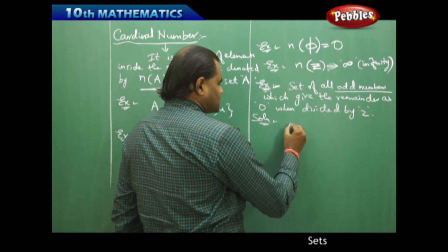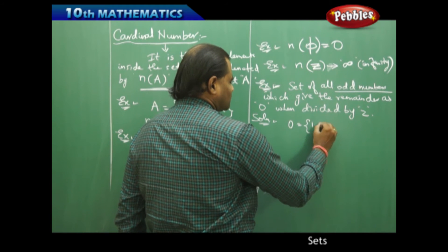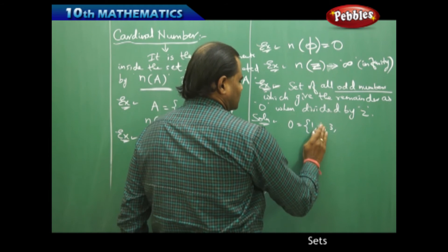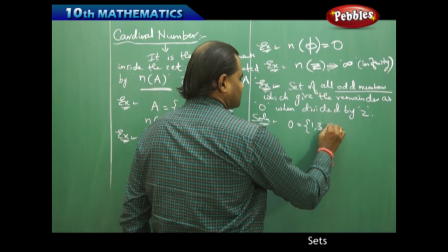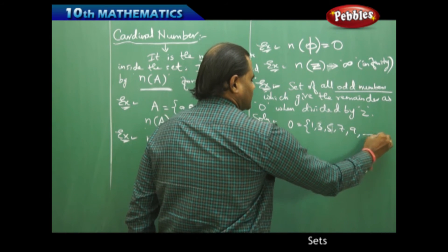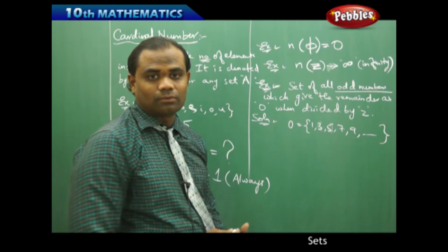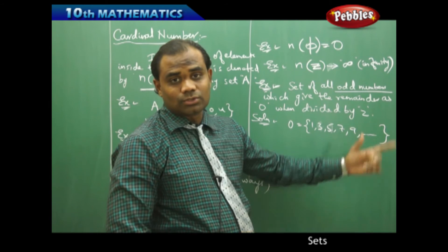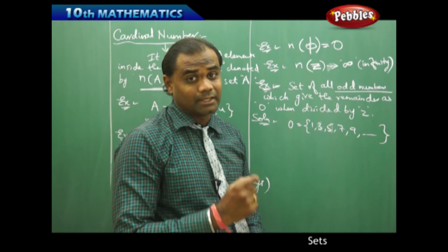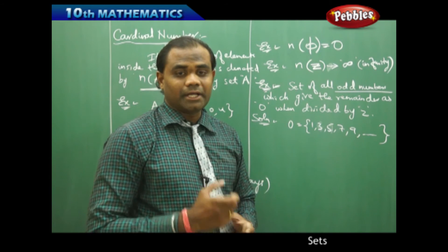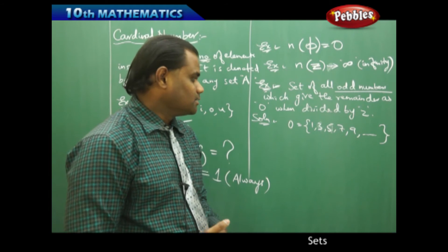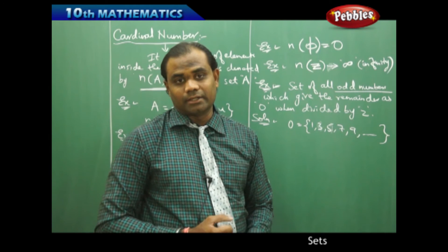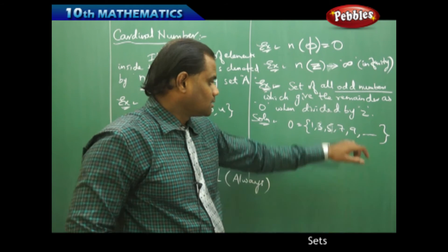So when I take the set of all odd numbers, let me pick up all the odd numbers: 1, 3, 5, 7, 9, and so on. Now I want to divide each of the odd numbers with 2 such that I get the remainder as 0. Is there any possibility that when I divide an odd number with 2 I get remainder 0? Let's test if it is possible.